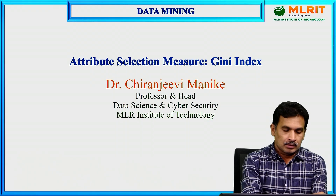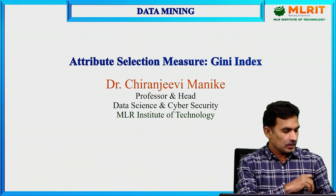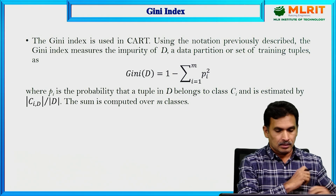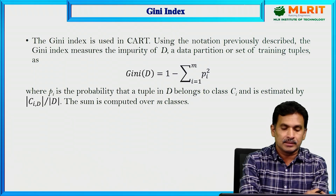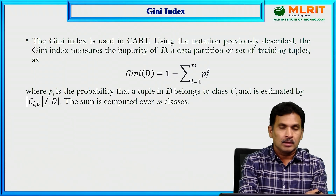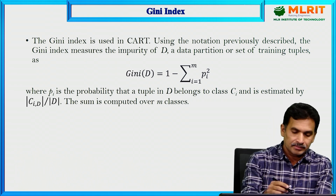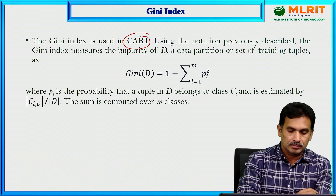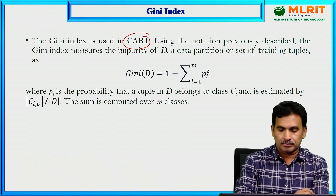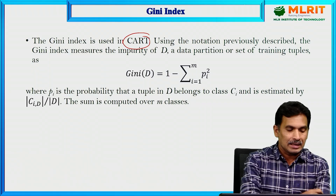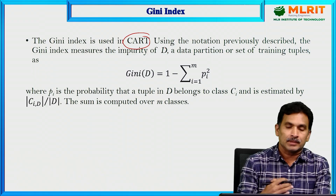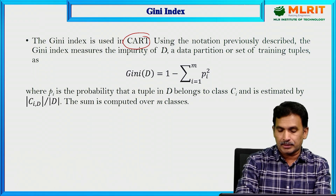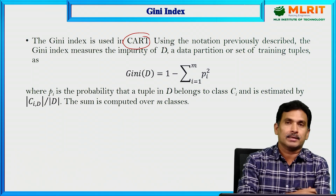The next attribute selection measure is the Gini index. Let us quickly see what the Gini index is and how it is different from previously discussed measures like gain ratio and information gain. The Gini index is used in CART — that is, classification and regression trees — using the notation previously described. The Gini index measures the impurity of D.